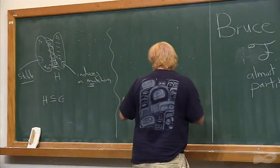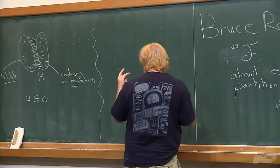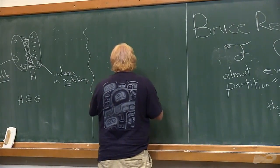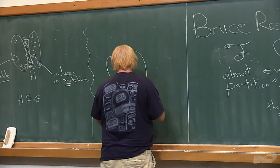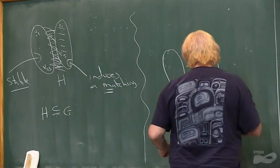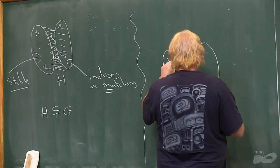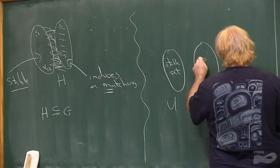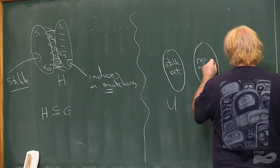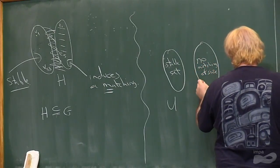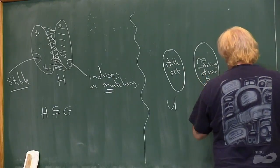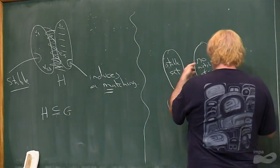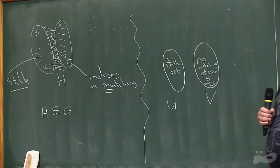So it turns out the witness partition number is going to be two. And your sort of natural candidate for this kind of partition will be a stable set here, and it will be a graph which has no matching of size S here. And if you think about it, that means that you can't get this as a subgraph.